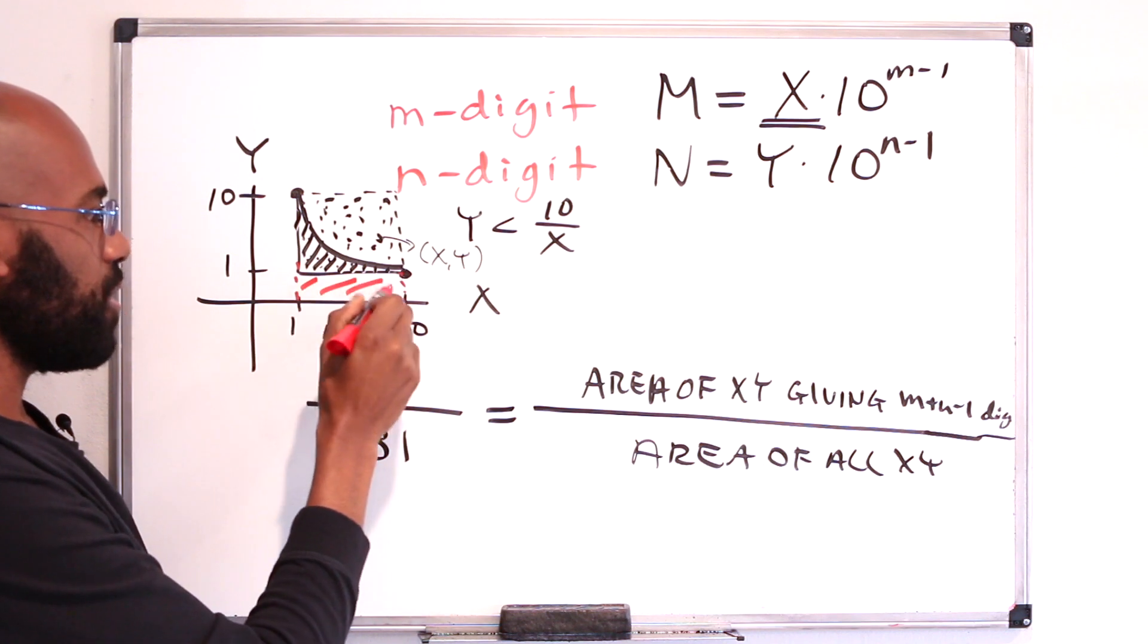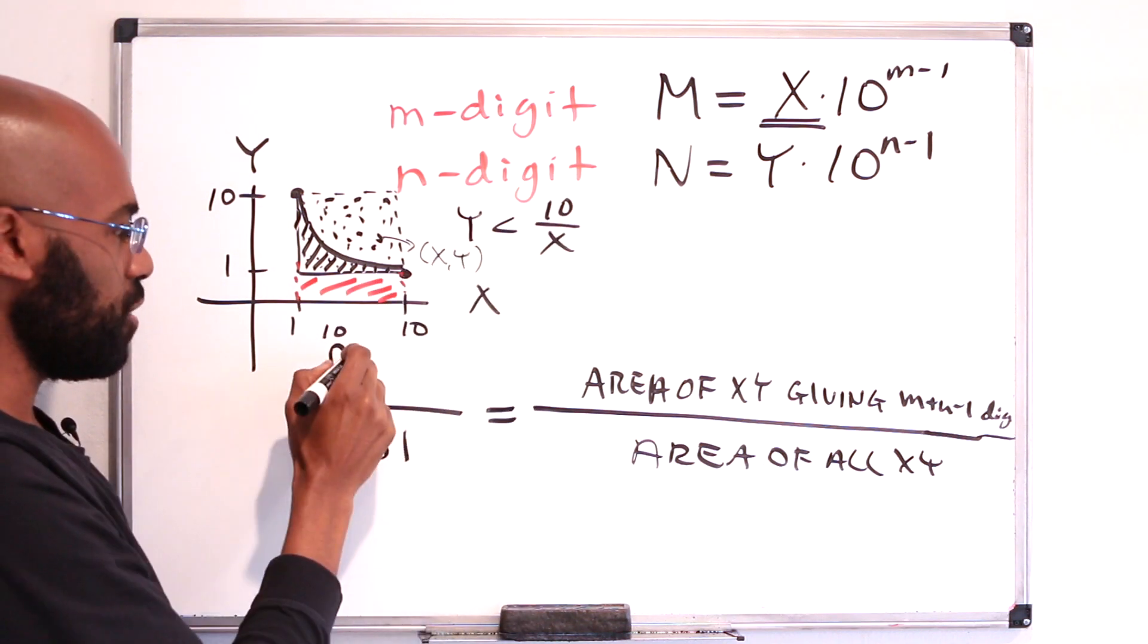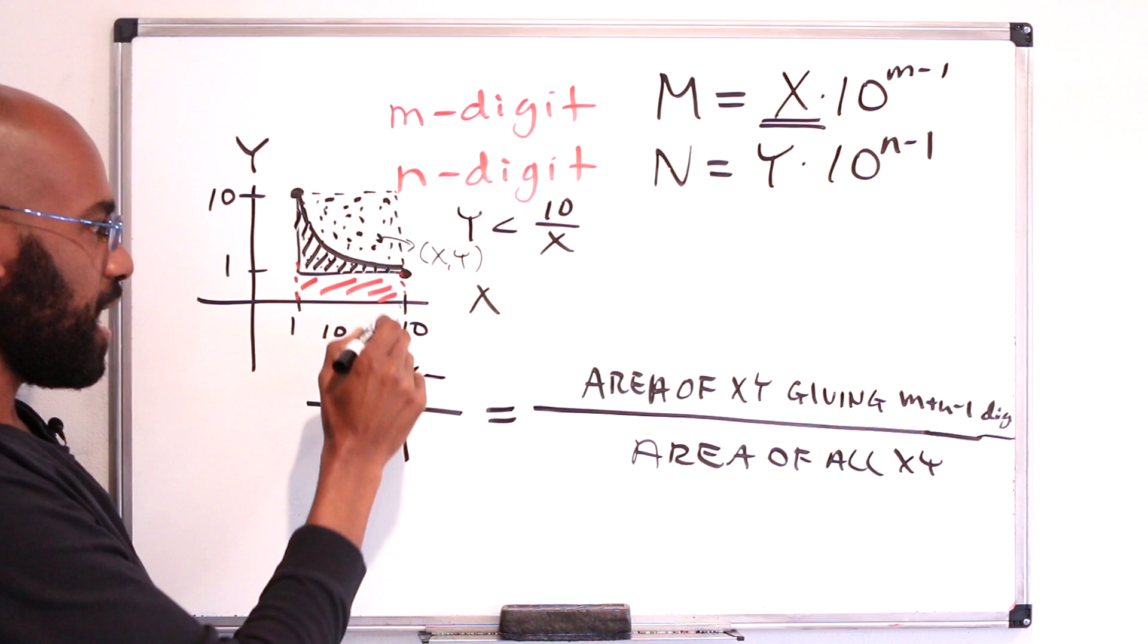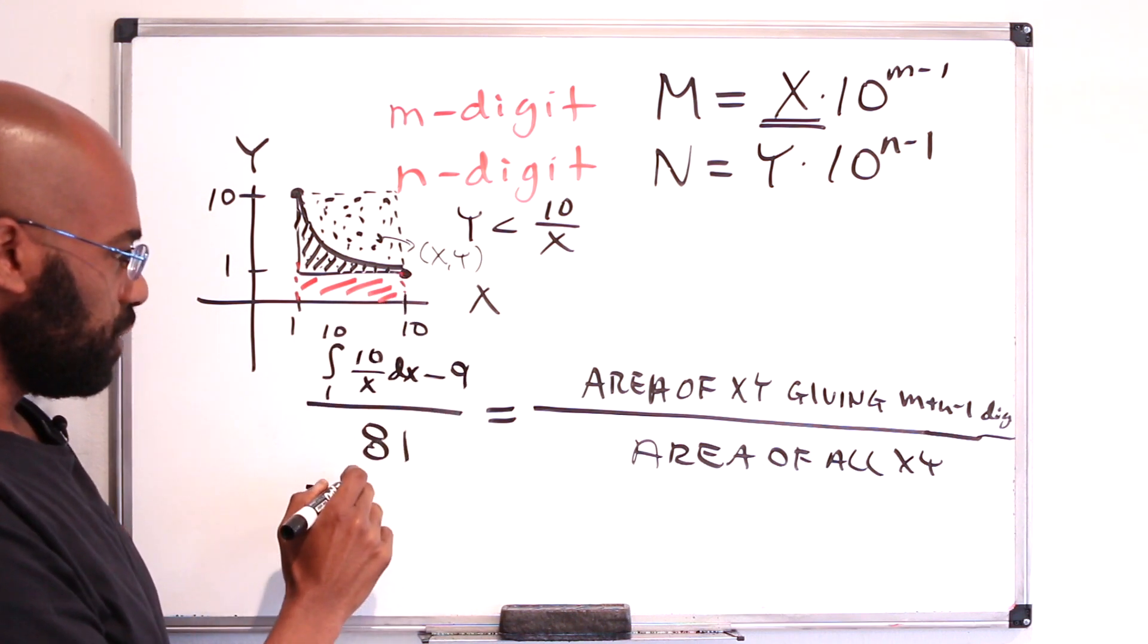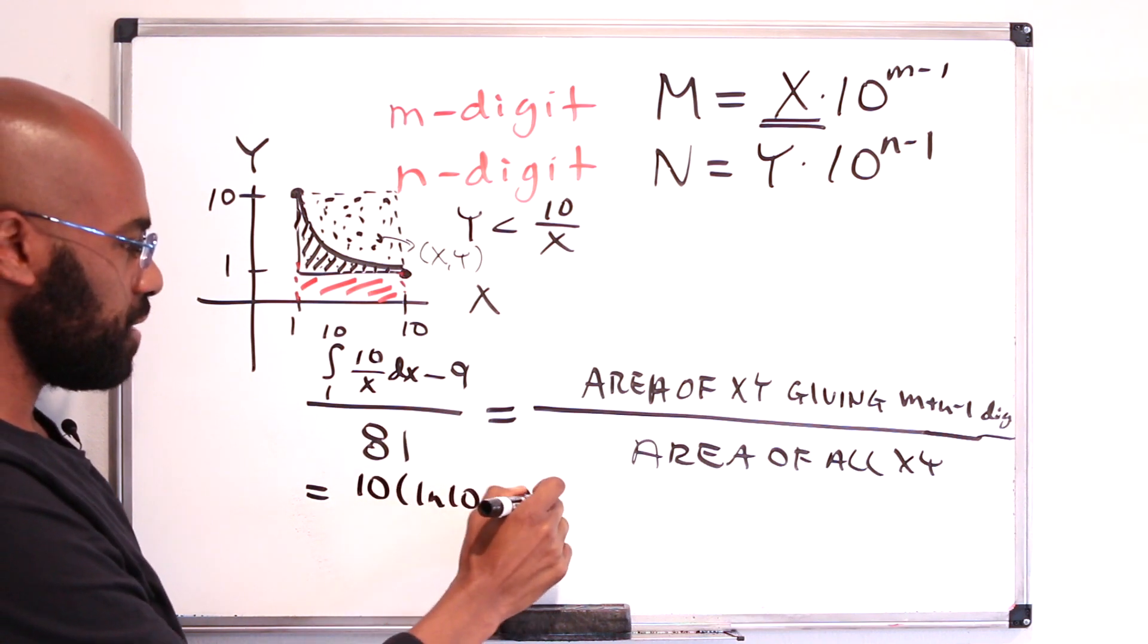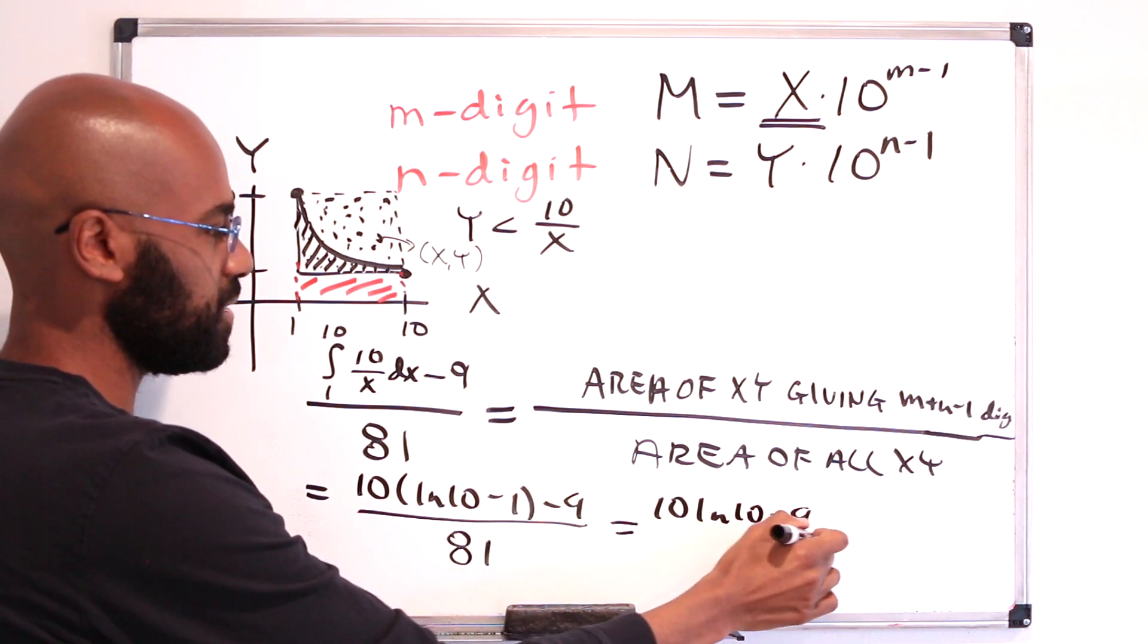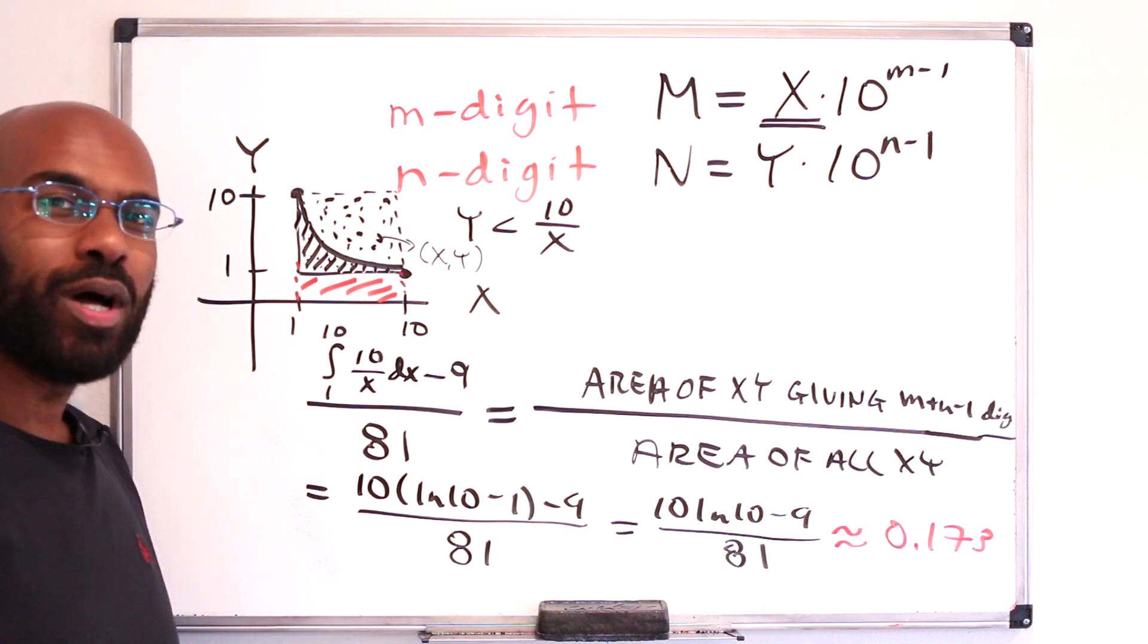So it's the integral from 1 to 10 of our function 10 over x dx, but then subtract the area of this rectangle, which has base length 9 and height 1. And so this works out to 10 times the natural logarithm of 10 minus 1 minus 9 over 81, or 10 ln of 10 minus 9 over 81, which is roughly 0.173.